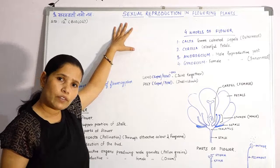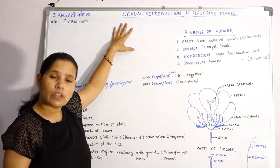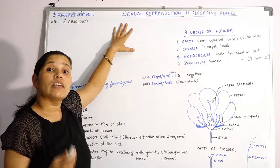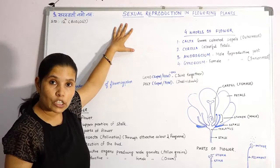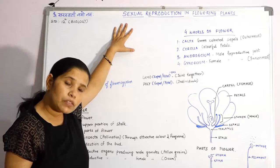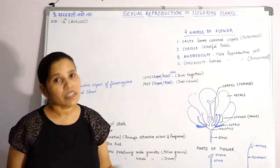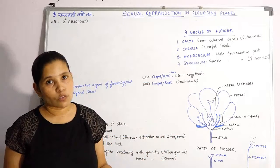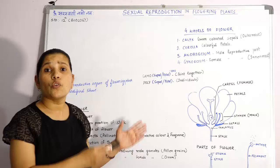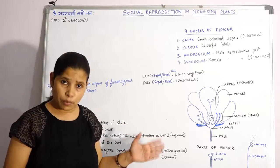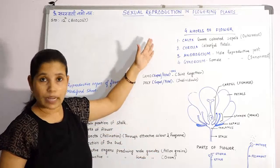In asexual reproduction, it does not require any kind of gametes. The cell itself goes into the process of reproduction. Various examples include binary fission, where the individual gets split into two. But we are not focusing on asexual methods of reproduction — we will focus on sexual reproduction in plants.